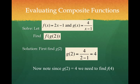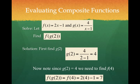Now since g of 2 equals 4, I need to find f of 4, because that's what g of 2 is. So I plug 4 into f and I get 8 minus 1 which is 7. And so my answer is 7.